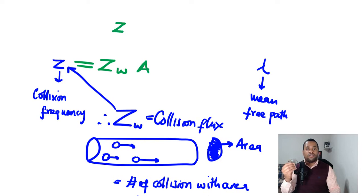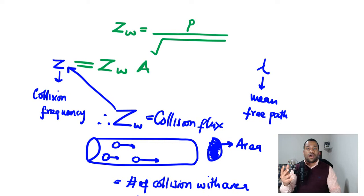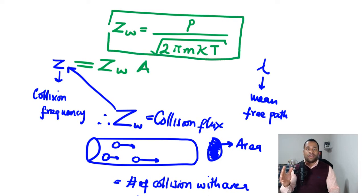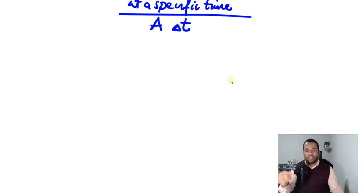The collision flux Z_W is equal to the pressure divided by the square root of two, multiplied by pi, multiplied by the mass of the particles, multiplied by the Boltzmann constant and the temperature. Our goal is to derive this particular formula, and to do so we need to look at various terminologies and conditions, starting off by creating a system.